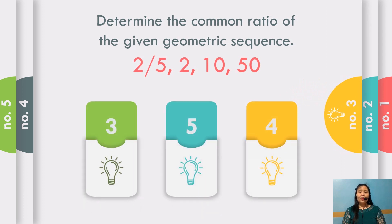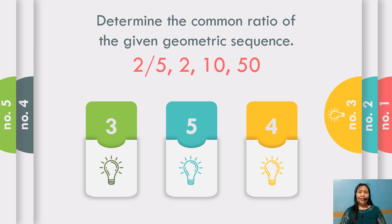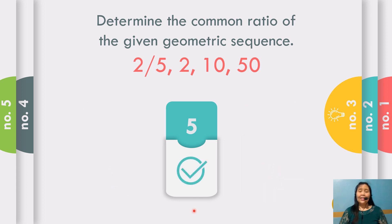How about number 3? The sequence is 2 over 5, 2, 10, and 50. What do you think is the common ratio? Any idea? Correct. The answer is equal to positive 5, because 10 divided by 2 is 5. 50 divided by 10 is also 5. And 2 all over 2 over 5 is also equal to 5.